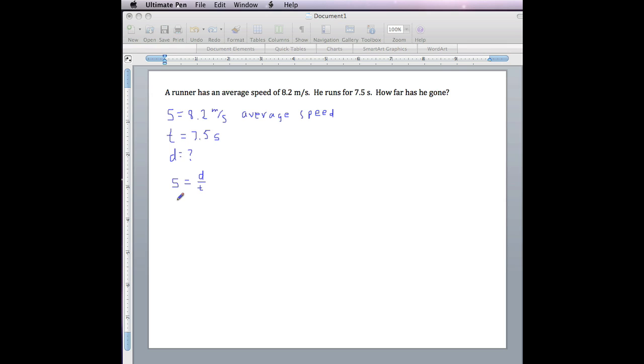We'll have S times T equals D over T times T. We notice that the T's cancel out on the right. This leaves ST equals D.